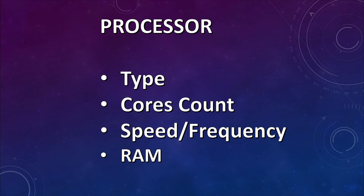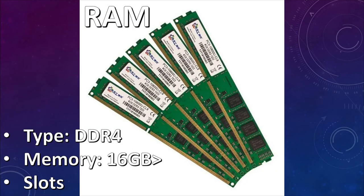When buying a processor, check the company and type — is it Ryzen 7 or i5? Check how many cores it has, what speed it can run at, whether it can boost to 5 GHz or 3 GHz, what the base frequency is (e.g., 1.4 GHz), and what RAM it supports.